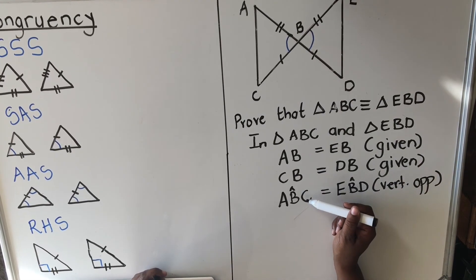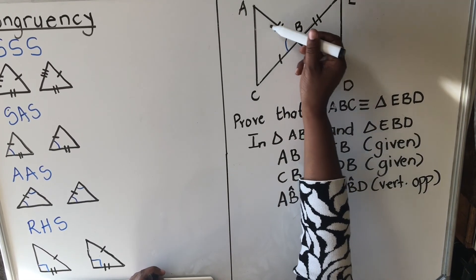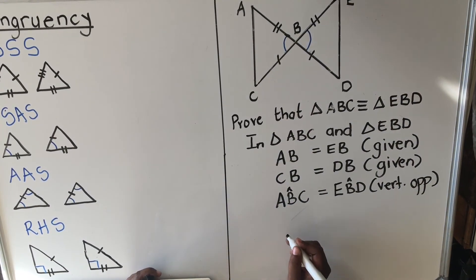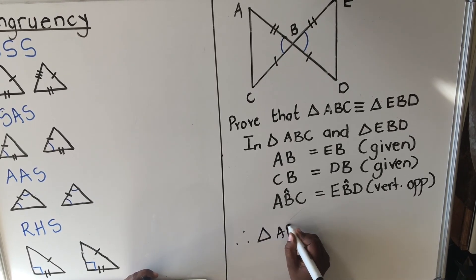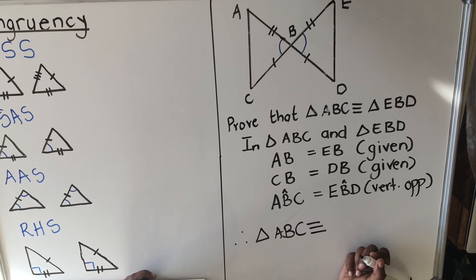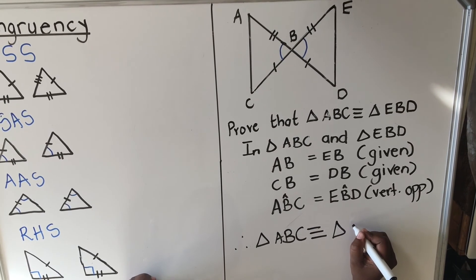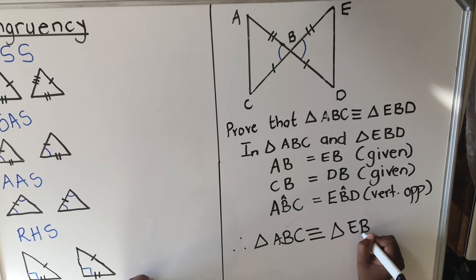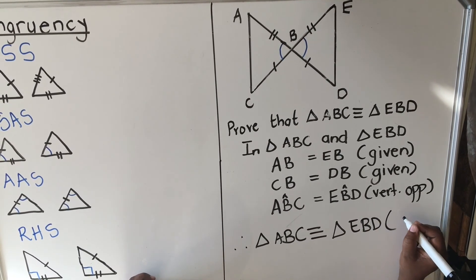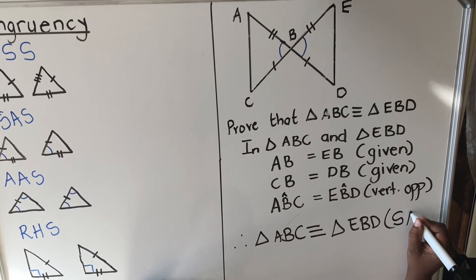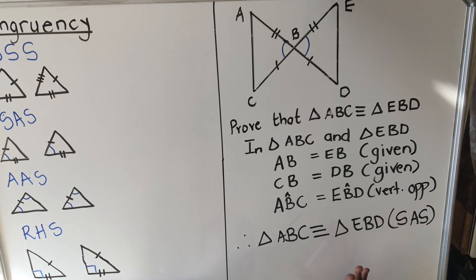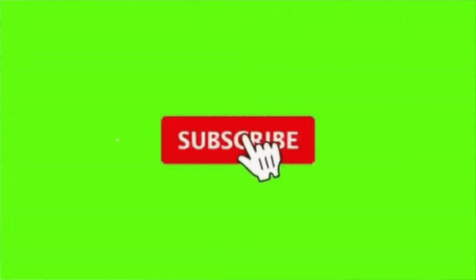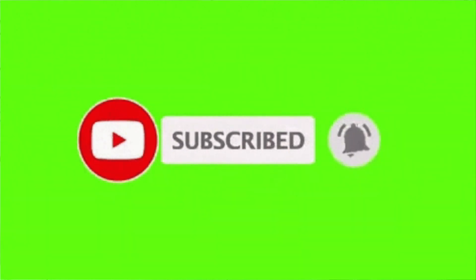Now I have two sides and an angle. I need to check if the angle is the included angle between the two sides — and it is. Therefore, triangle ABC is congruent to triangle EBD. The reason for congruence is Side-Included-Angle-Side, which you must also write to get the mark. Practice this because you will be using congruence all the way to Grade 12. Thank you for watching — this is the end of our lesson.